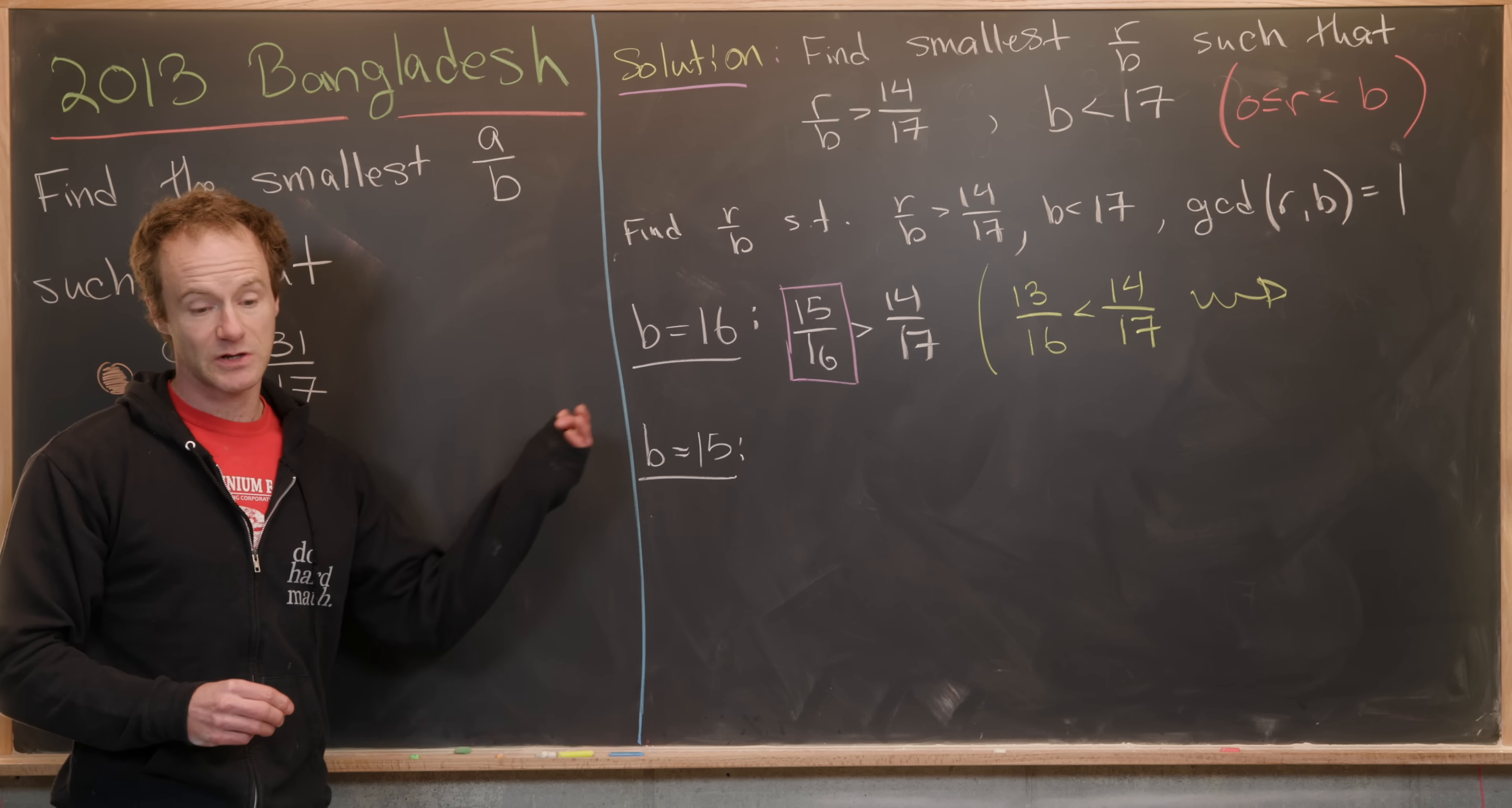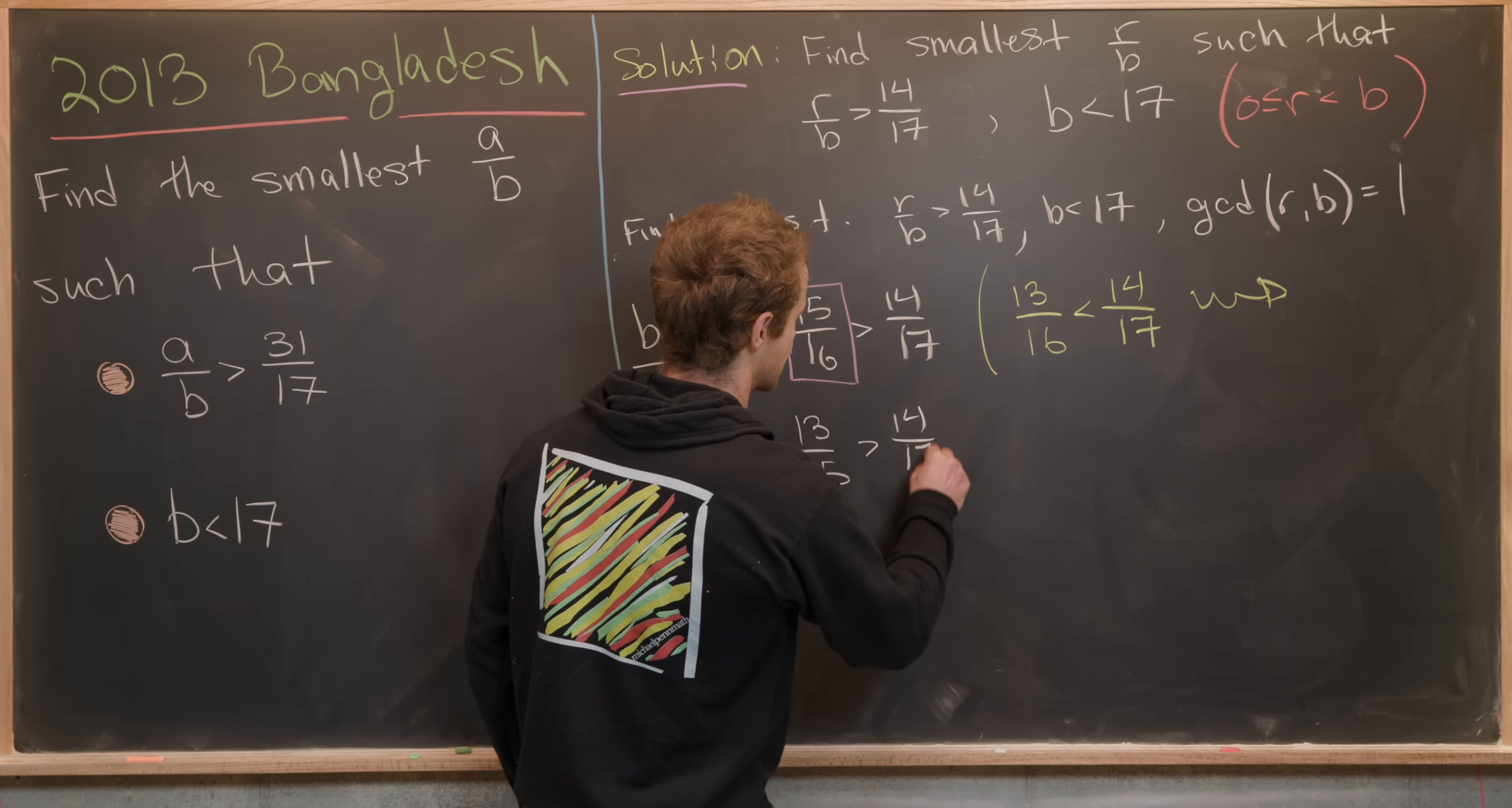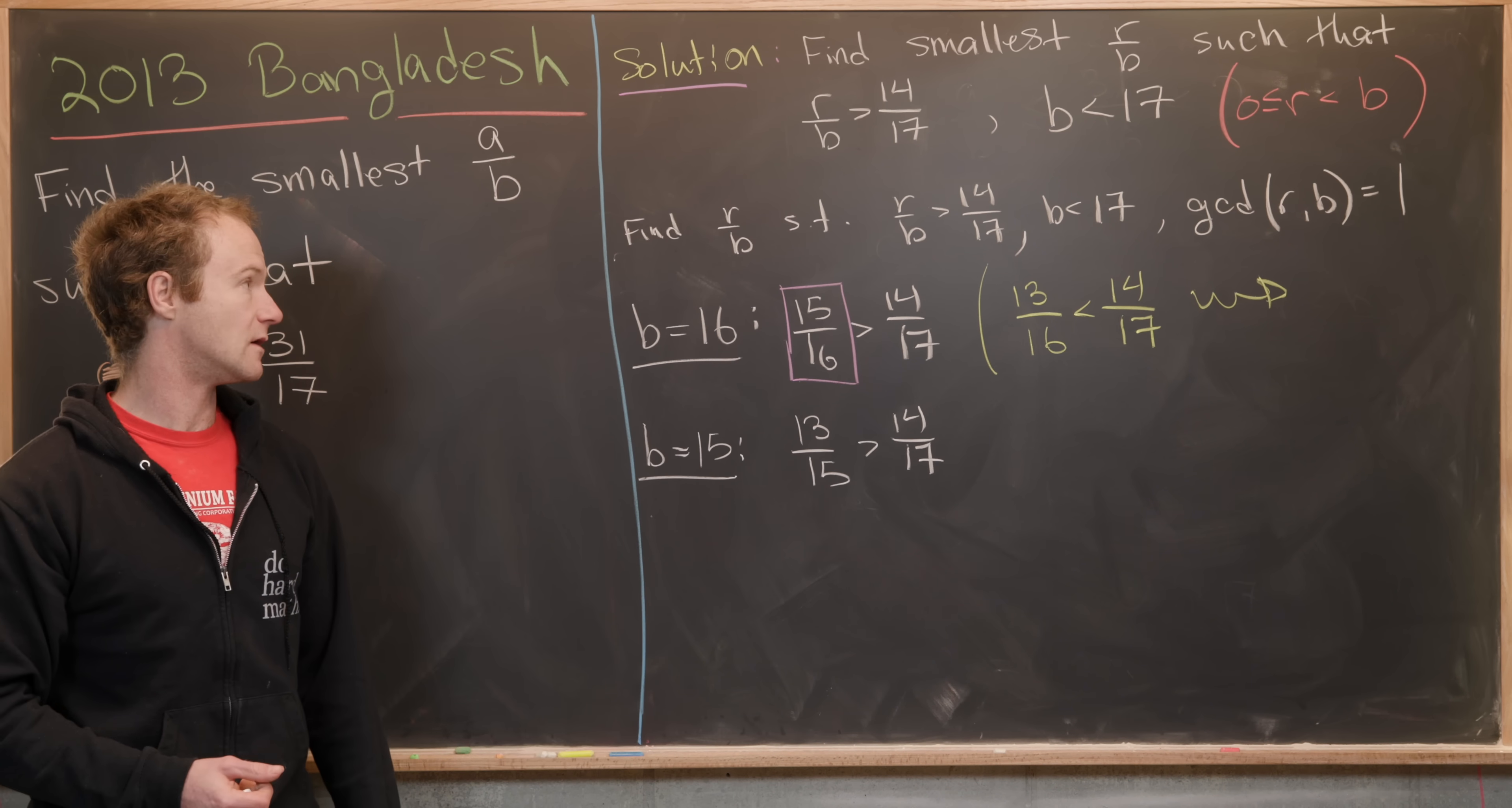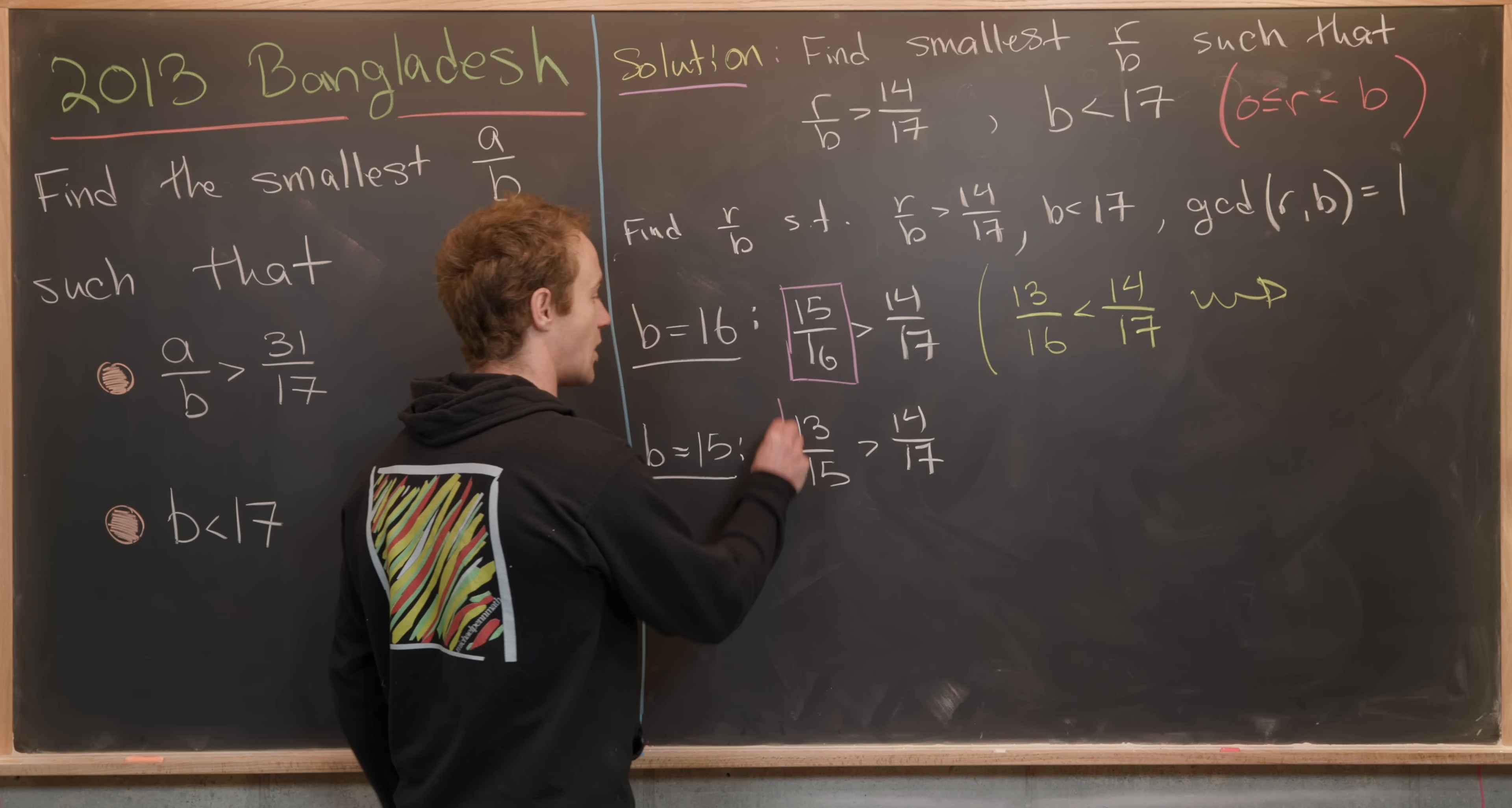We can see that 13 over 15 is bigger than 14 over 17. 14 over 15 is as well, but 13 over 15 is smaller than 14 over 15, so we might as well just take the smaller one.